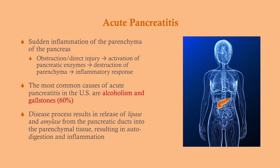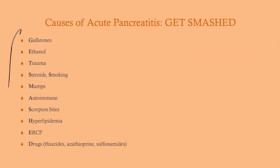The most common causes of acute pancreatitis in the United States are alcoholism and gallstones, accounting for about 60% of cases. Another substantial amount of cases are idiopathic. Of the cases where we can identify a cause, these tend to be the main ones.